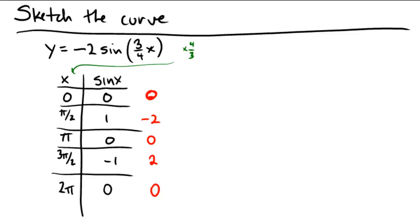0 times 4/3 is 0. π/2 times 4/3 is 4π/6, which simplifies to 2π/3. 4/3 times π is 4π/3. When I multiply 3π/2 by 4/3, that's going to be 2π. And then in the last place, I'm going to have 8π/3. So now I can take all of those pieces of information and bring them together into my graph.